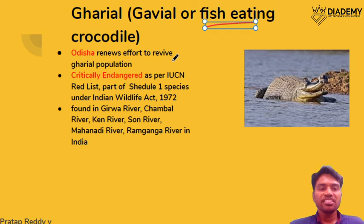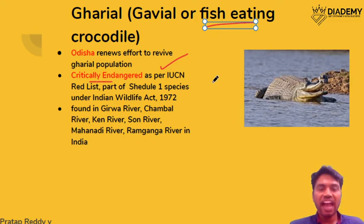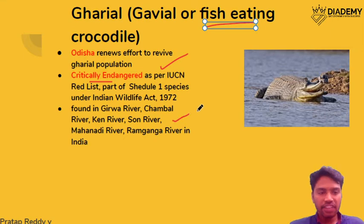The gharial is critically endangered under IUCN and is listed under Schedule I of the Wildlife Protection Act 1972. It is found in the Girwa, Chambal, Ken, Soan, Mahanadi, and Ramganga rivers.